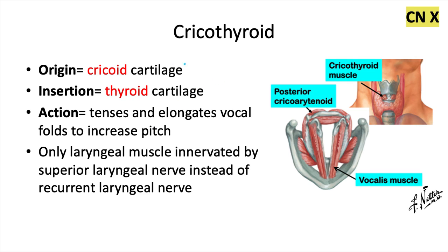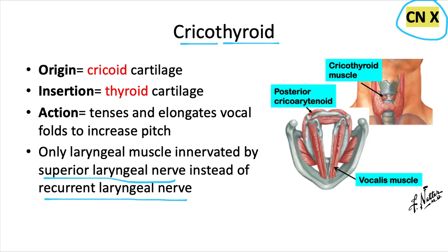The cricothyroid muscle originates from the cricoid cartilage and inserts into the thyroid cartilage — and the name already gives away those first two key pieces of information. This muscle acts by tensing and elongating the vocal folds in order to increase the pitch of your voice, or your pitch while singing. It's the only laryngeal muscle innervated by the superior laryngeal nerve instead of the recurrent laryngeal nerve. Both of these are just two different branches of the vagus nerve, and all other intrinsic larynx muscles are innervated by the recurrent laryngeal nerve.